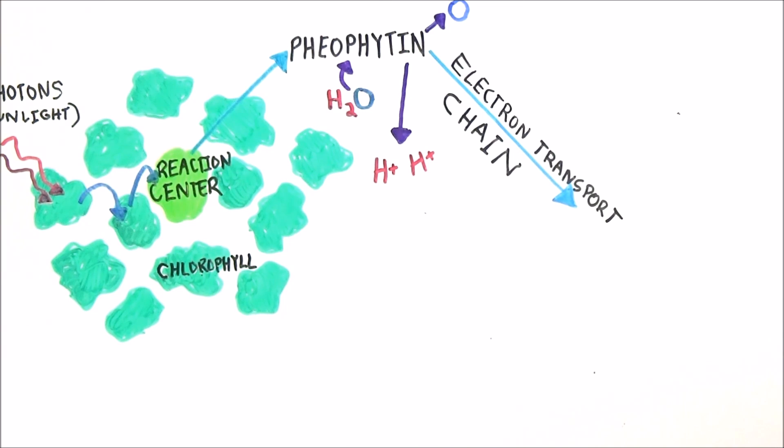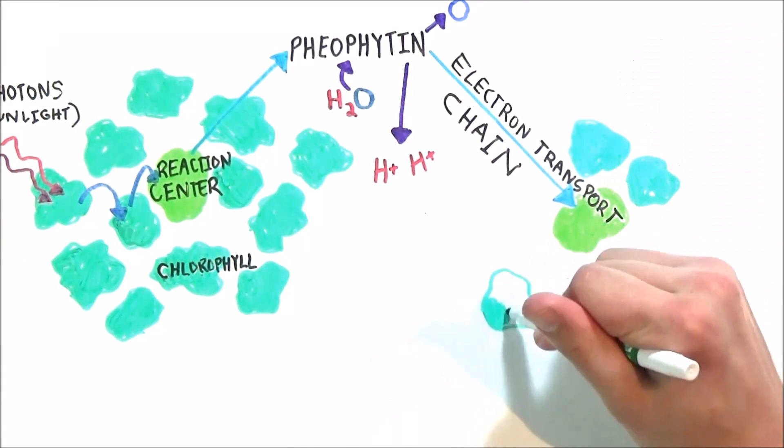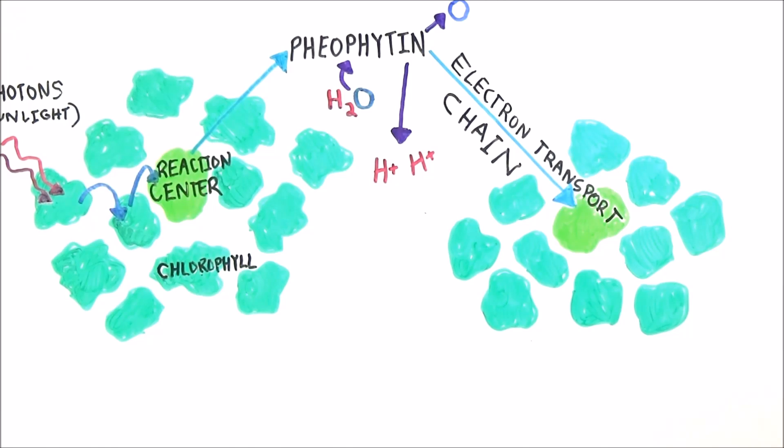The electron transport chain eventually dumps extra electrons taken from the pheophyton into a second antenna complex, called photosystem I, that acts similar to the last photosystem, but energizes these dumped electrons into the reaction center instead. The electrons are used to make NADPH, which has an important role in making sugar.